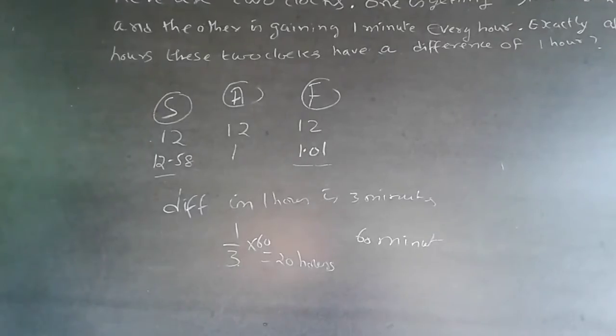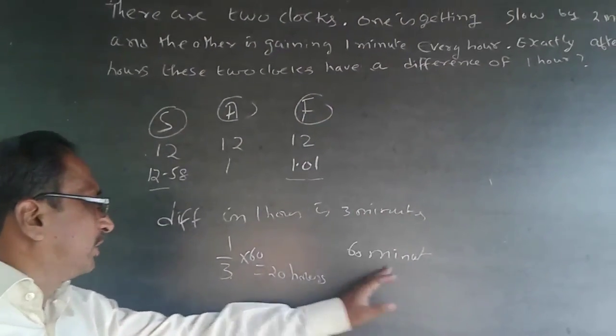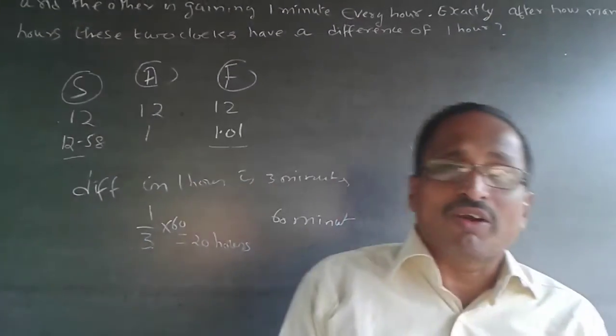Your train rules are applicable. So, here in one hour, the difference is three minutes. To have a difference of 60 minutes, it will be 1 by 3 into 60 which will be 20 hours. The answer is 20 hours.